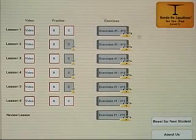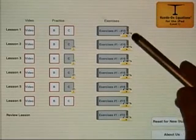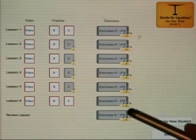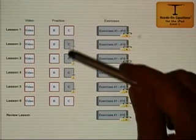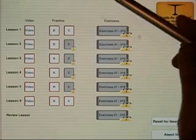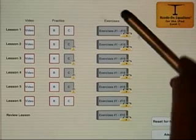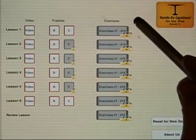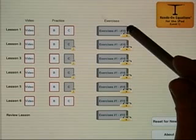When you first download the app, all of the exercises will be locked, as you see them here, and all of the C examples will be locked. Once you do example B, that will unlock C, and once you do C, that will unlock the exercises for that lesson.